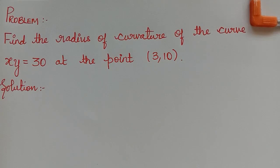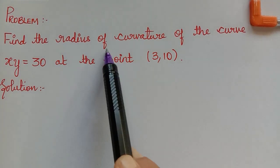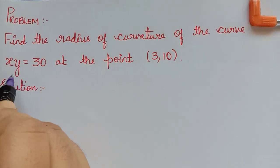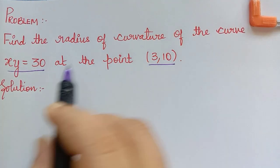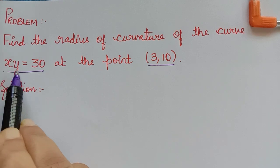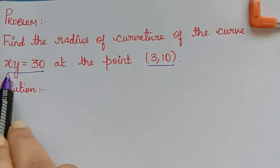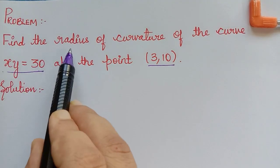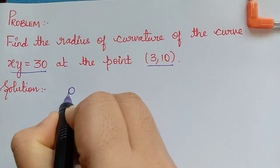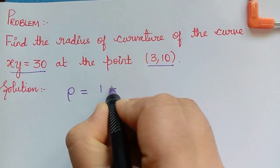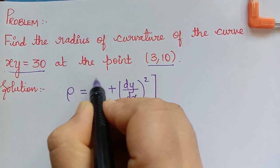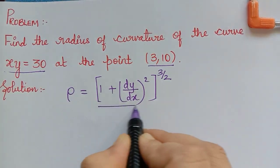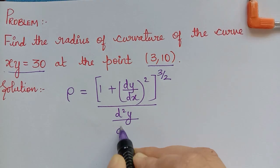Dear students, under the topic radius of curvature, we have a question: find the radius of curvature of the curve xy = 30 at the point (3, 10). Since the given curve is in the form of a Cartesian equation, the formula for radius of curvature is rho = (1 + (dy/dx)²)^(3/2) divided by d²y/dx².